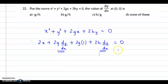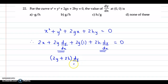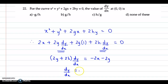Now we collect the dy by dx terms and transfer the other terms to the right hand side. So we have 2y plus 2h as the common factor, that's dy by dx equal to minus 2x minus 2g. So dy by dx equals minus 2x minus 2g divided by 2y plus 2h.